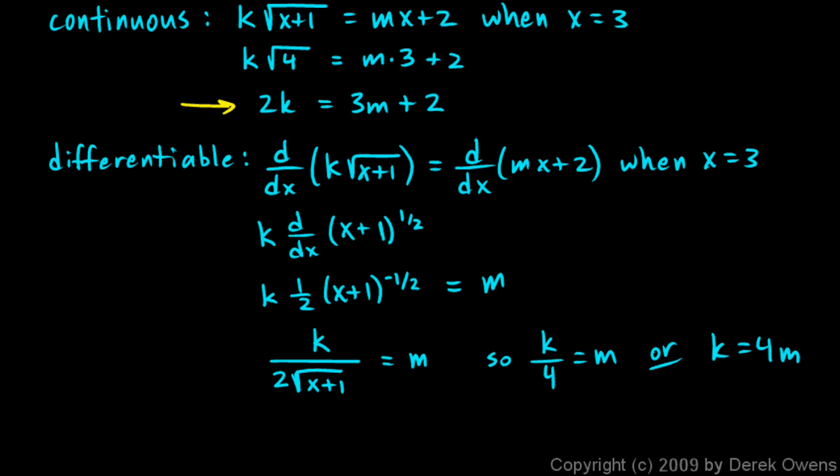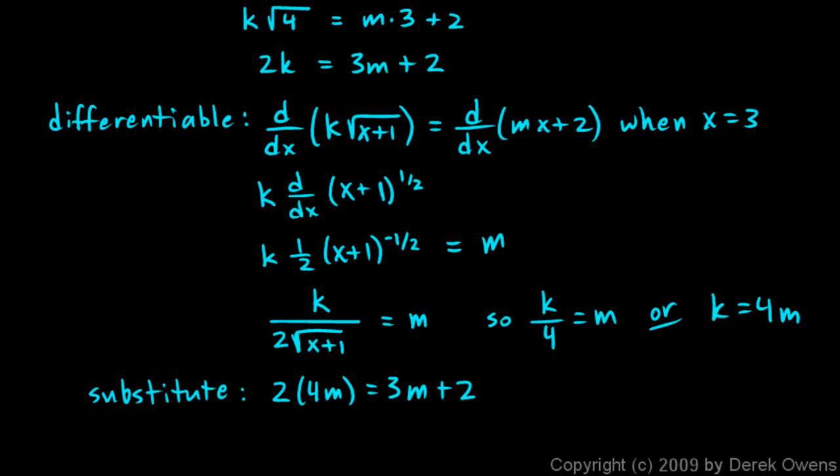Now let's take that and substitute it back into this equation. And so I'm going to write 2 times k right here. But instead of k I'm going to write 4m. So 2 times 4m equals 3m plus 2. And now we're down to an algebra 1 problem. We can solve this. This is 8m equals 3m plus 2.